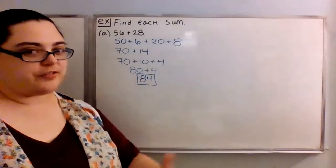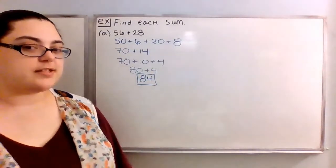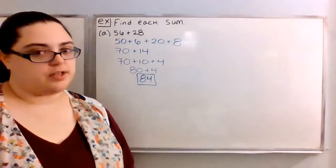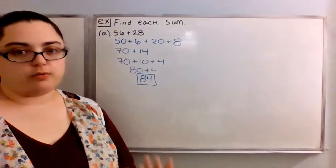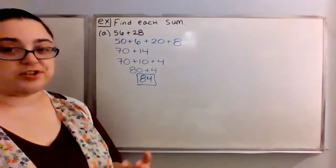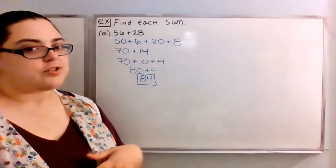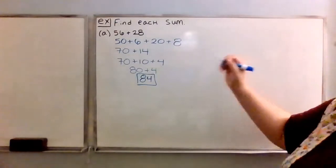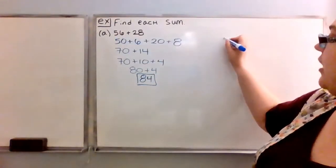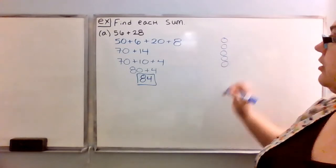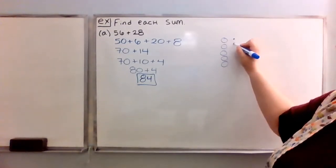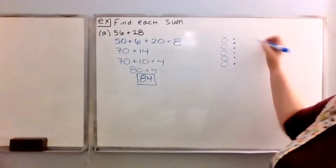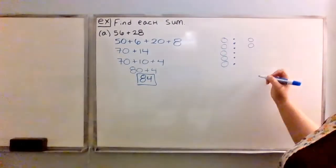So that's an example of a chain reaction happening in the addition process. Now I worked this all out with numbers, but we also saw some ways we could express this using pictures, where we used circles for the tens place and dots for the ones place. So let's see what that would look like. For 56, we would have five circles and then six dots. And then for 28, we would have two circles and then eight dots.